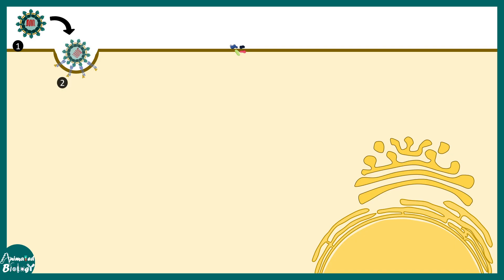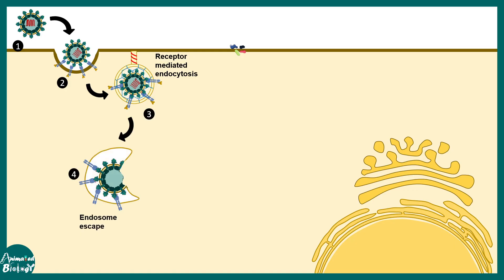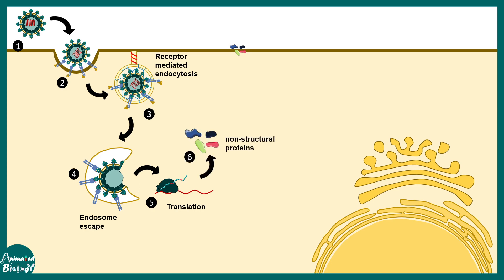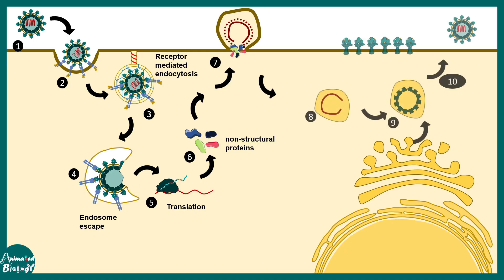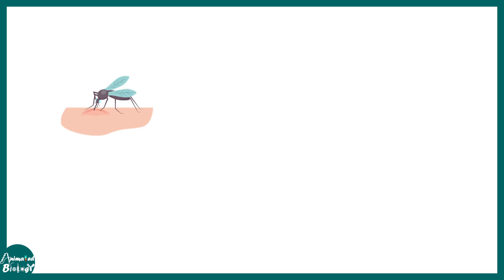The Chikungunya virus gets in via receptor-mediated endocytosis and releases its genetic content into the cytoplasm, which gets translated to form non-structural proteins used for replicating the genetic material. Eventually the genetic material gets assembled with the capsid proteins and ultimately the virus forms and moves out of the cell to infect a new cell.